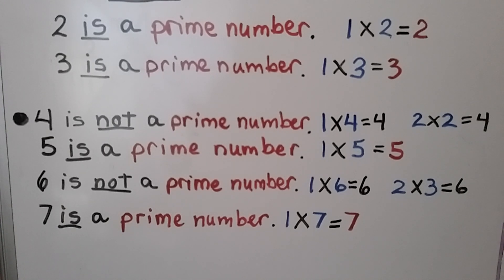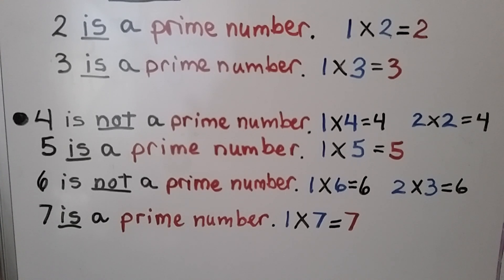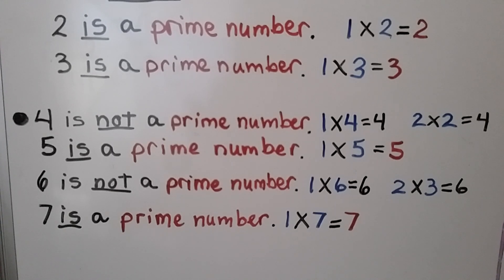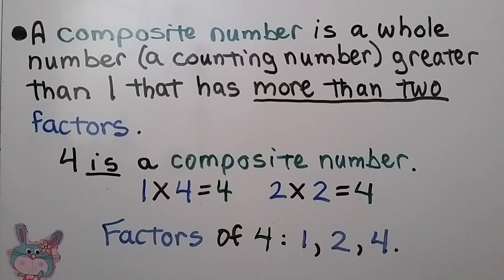4 is not a prime number because we have 1 times 4 and 2 times 2. 5 is a prime number — we only have 1 times 5 equals 5. And 6 is not a prime number; we have 1 times 6 and 2 times 3. 7 is a prime number; we only have 1 times 7 equals 7.